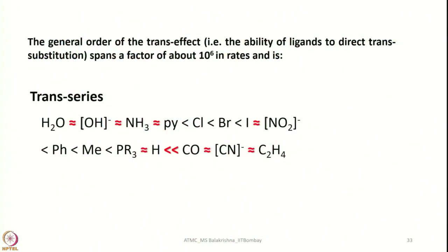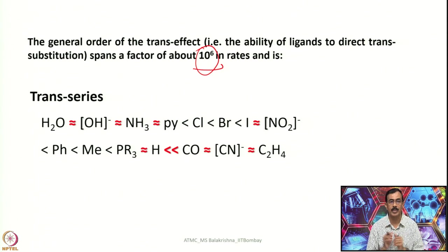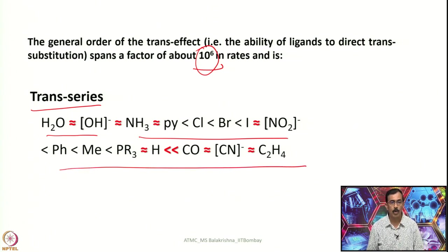In octahedral complexes, the trans effect may or may not influence substitution, whereas in square planar complexes it has a tremendous influence on both the rate and the mechanism of the reaction. The general order of the trans effect — meaning the ability of ligands to direct trans substitution — spans a factor of about 10⁶ in rates, indicating a remarkable influence. The trans series lists ligands in order of their trans-directing ability, covering the important ligands encountered in substitution reactions of square planar complexes.